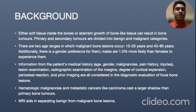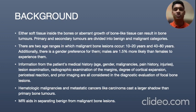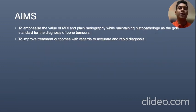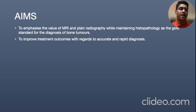Information from a patient's medical history including age, gender, malignancies, pain history, injury, lesion examination, radiographic examination of the margins, degree of cortical expansion, periosteal reaction, and prior imaging are all considered in the diagnostic evaluation of focal bone lesions. Hematological malignancies and malignant cancers like carcinoma cast a larger shadow than primary bone tumors. MRI will aid in separating benign from malignant bone lesions. The aim is to emphasize the value of MRI and plain radiography while maintaining histopathology as the gold standard for diagnosis of bone tumors, and to improve treatment outcomes with accurate and rapid diagnosis.